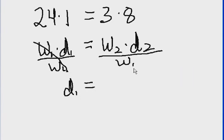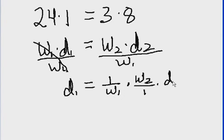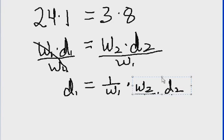Well, w2 times d2 over w1. Let me write it this way: 1 over w1 times w2 over 1 times d2 over 1. Well, I don't have to write it like that. If they're over 1, they're equal to themselves. I could just bring it down like that.